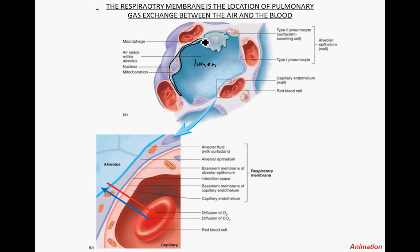There are a couple of other cells associated with the alveolus. There is a macrophage — a type of white blood cell — that is able to monitor the incoming air for bacteria, viruses, and fungal spores. There is also another type of cell: a type 2 pneumocyte cell, which is a surfactant-secreting cell.